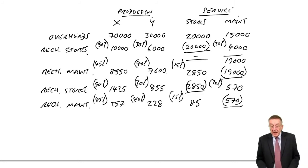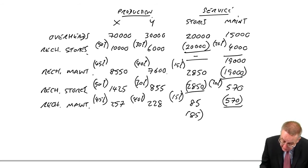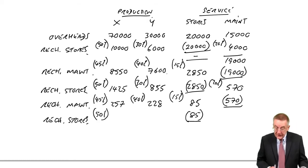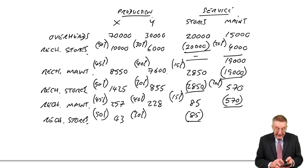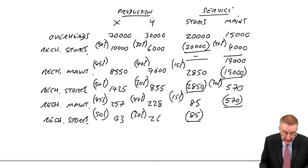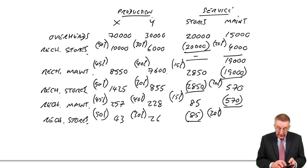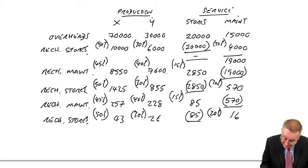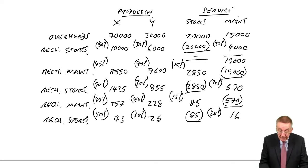Let's carry on recharging. Let's take the 570, recharge maintenance. So 45% goes to X, which is 257. 40% goes to Y, which is 228. And the remaining 15% goes to stores, 85. When you're rounding, always round the production departments up and service departments like stores down.